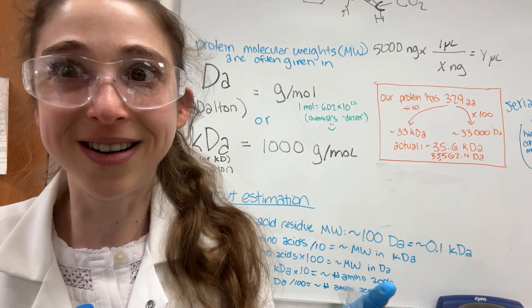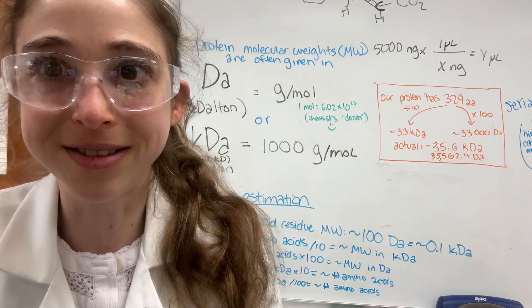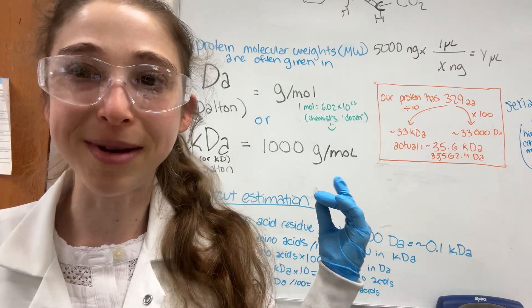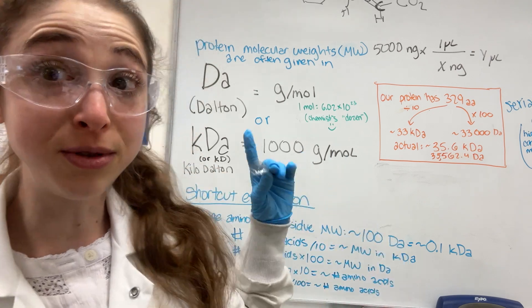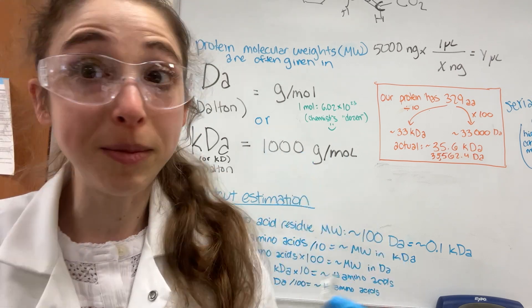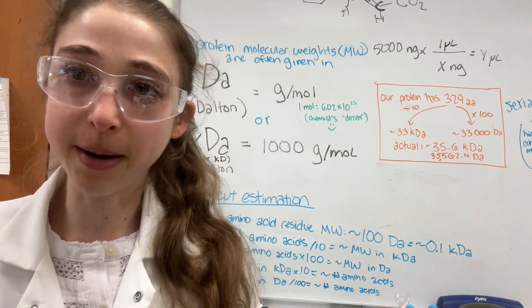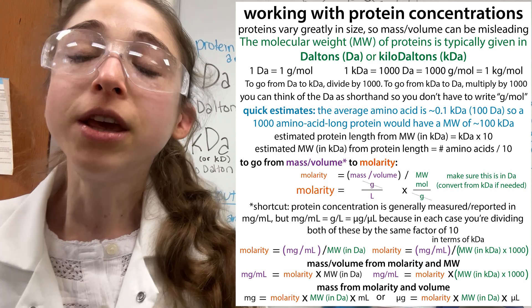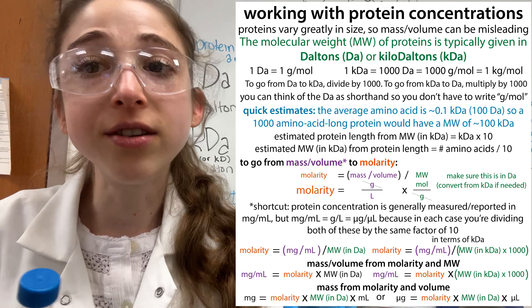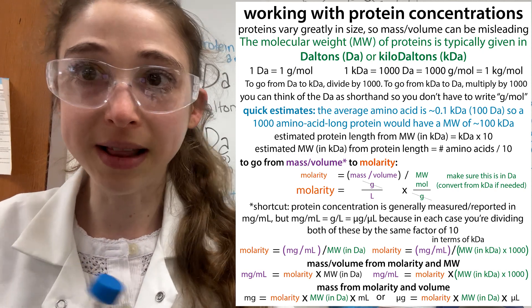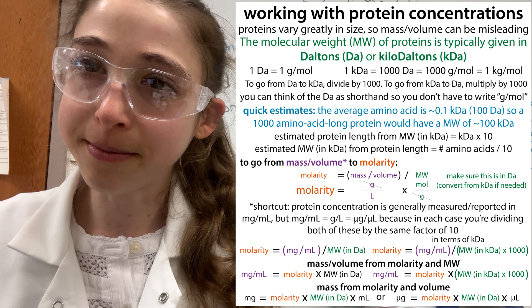Biochemists work really hard, so we like to be lazy about some other things, like our naming. Basically, you'll see us use Dalton when we mean gram per mole, and kilodalton which means 1,000 gram per mole. You'll see both of these used often when you're dealing with protein molecular weights — the gram per mole of a protein.